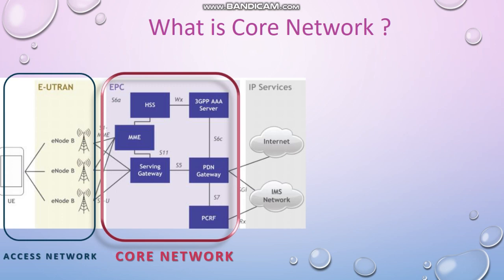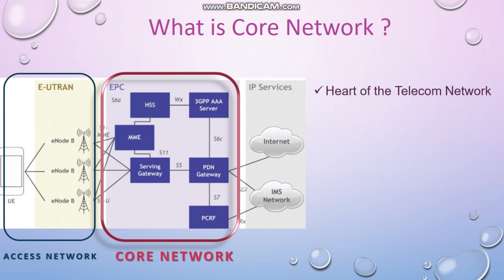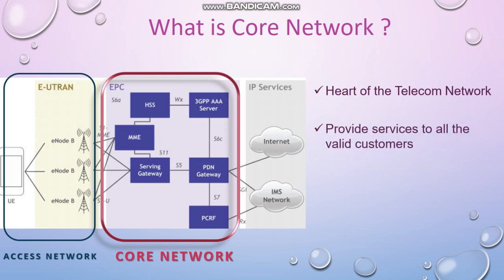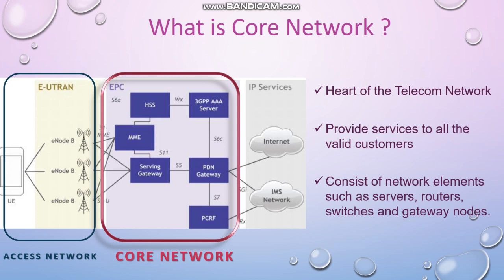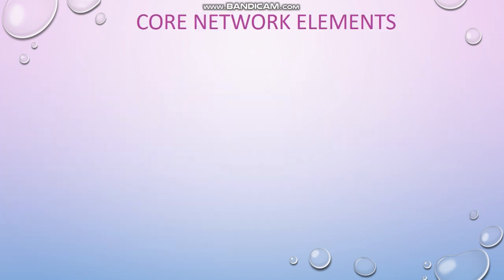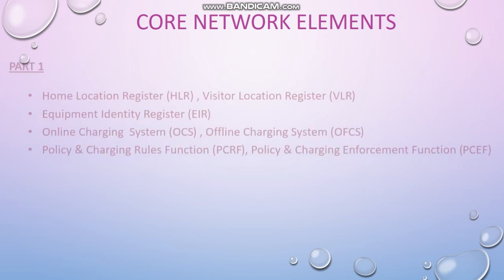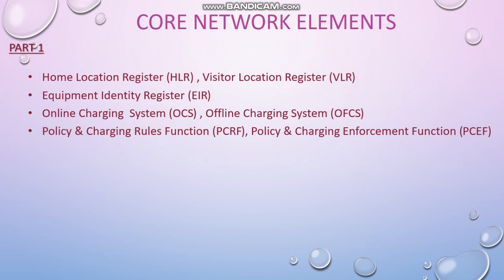Core Network is the heart of any telecom network. We call it the Evolved Packet Core, or EPC, in 4G Core Networks. Core Network provides services to all valid customers. It can be visualized as an interconnection of databases, gateway nodes, routers and switches. From this video we are going to learn about the major elements of the Core Network and their contribution to the network.